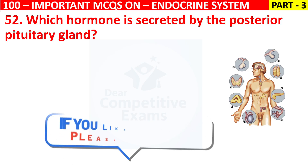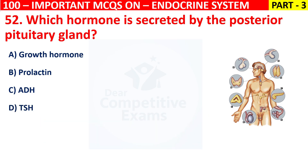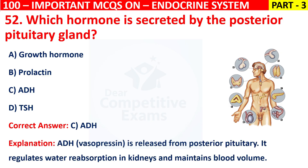Your options are Growth hormone, Prolactin, ADH, or TSH. The correct answer is C, that is ADH. ADH hormone, vasopressin, is released from the posterior pituitary. It regulates water reabsorption in kidneys and maintains blood volume.